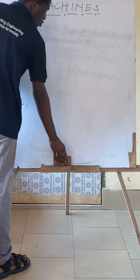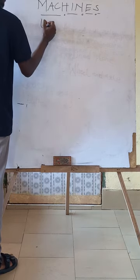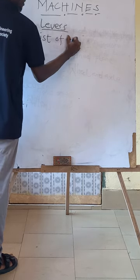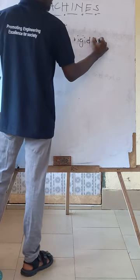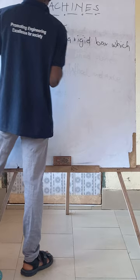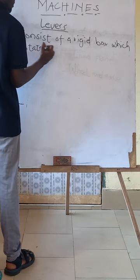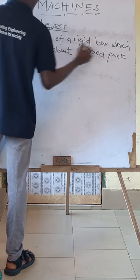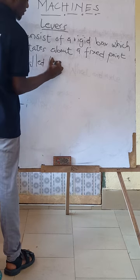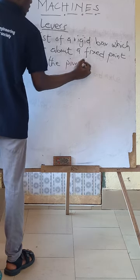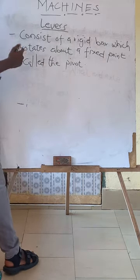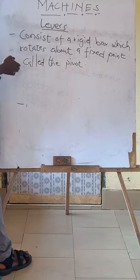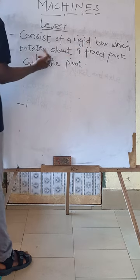A lever is also a kind of machine. So let's look at levers. A lever consists of a rigid bar which rotates about a fixed point called the pivot. When we go into details you'll understand what we mean by a rigid bar rotating about a fixed point called a pivot.